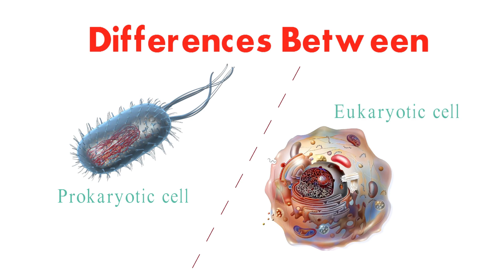First of all, let's see what prokaryotic and eukaryotic cells are. Prokaryotic cells and eukaryotic cells are the two main types of cells in the world. Prokaryotic cells are the simplest type of cells, and they are found in bacteria and archaea.